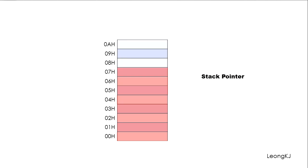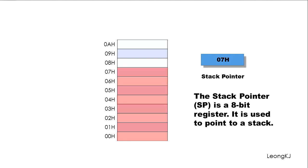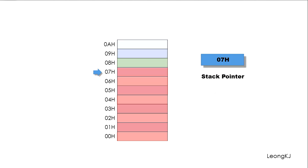This record of the top of the stack is a register which we call the stack pointer. The stack pointer is an 8-bit register used to point to the stack. It can be represented by a pointer pointing to the top of the stack. When data is placed in the stack, the stack pointer moves to point to the top of the stack.